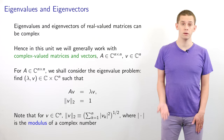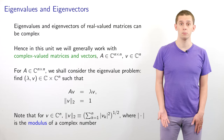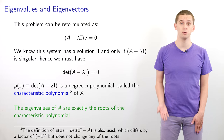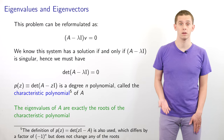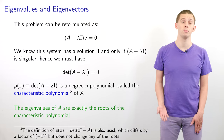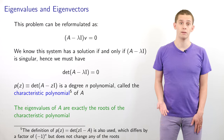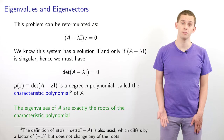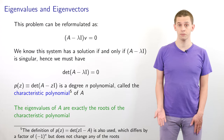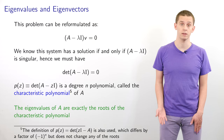If we look at the equation A times v is equal to lambda times v, then we can move the lambda v over to the left-hand side and reformulate the equation as A minus lambda I, all multiplied by v, is equal to 0. We know that this system will have a solution if and only if A minus lambda I is singular.